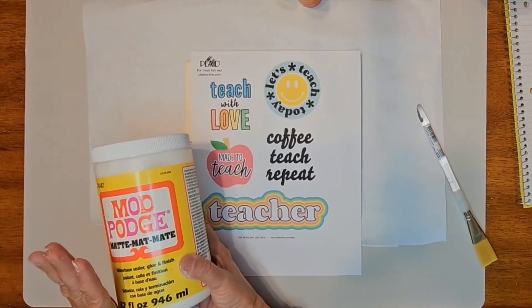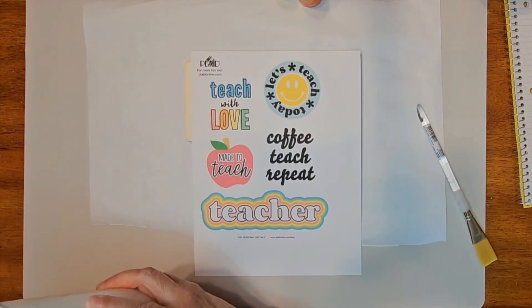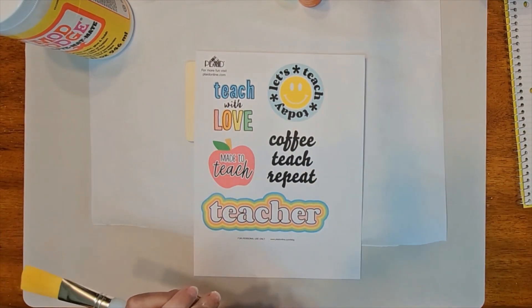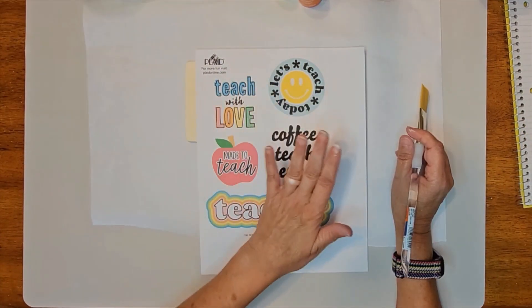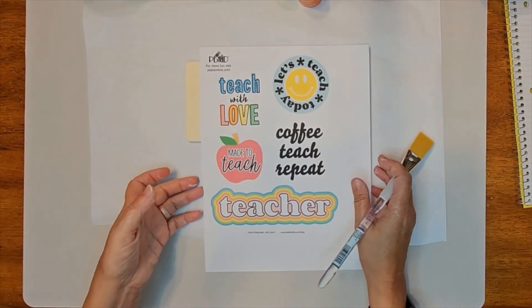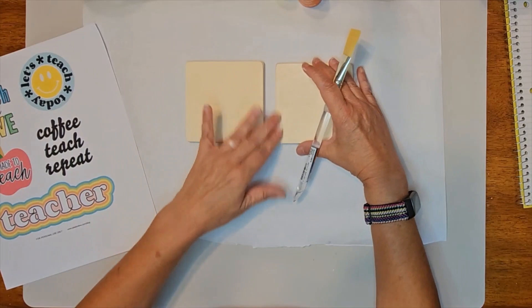I have my Mod Podge mat, and a paintbrush, water. I think that is really all we are going to need today. You will be able to find everything that I have used in the description, so refer to that if you decide that you want to do this little project.